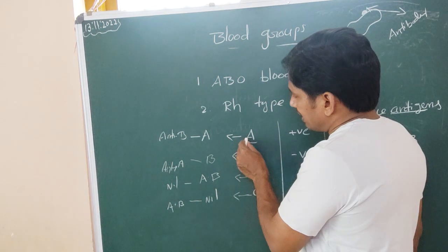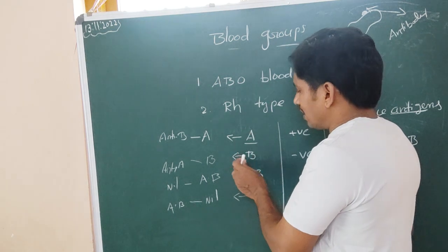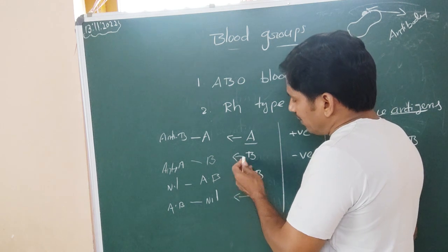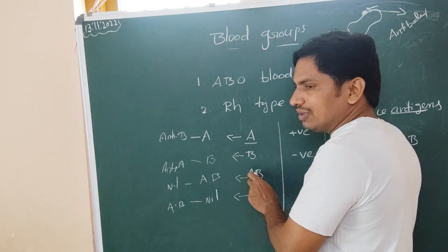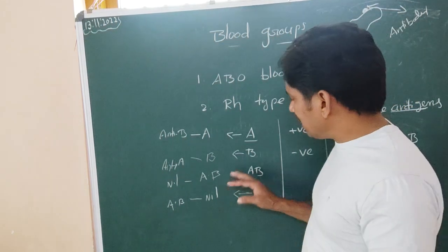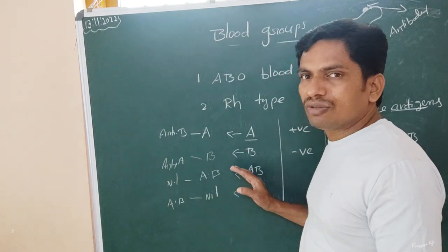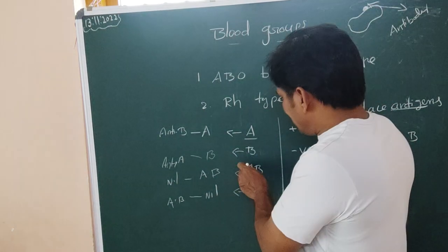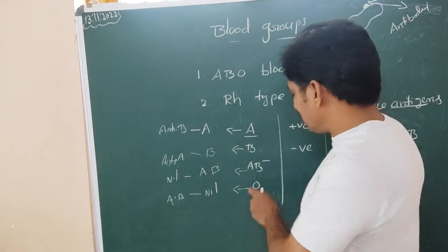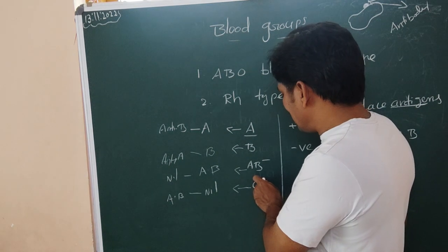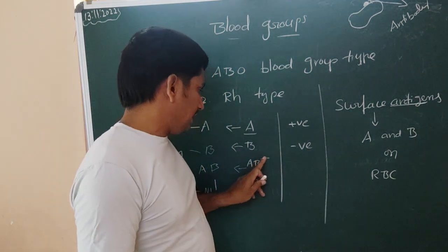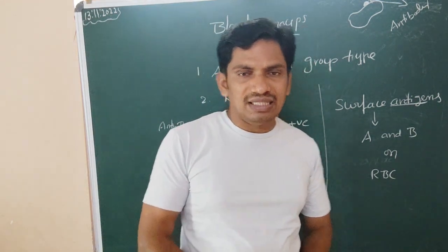A group can receive blood from A and O. B group people can receive blood from B and O. AB people should not donate blood to anyone except AB, but they can receive blood from all groups — that is why AB is called the universal recipient. O negative is called the universal donor.